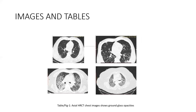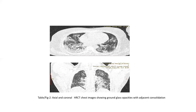Coming to images and tables: in these axial HRCT images we can see ground glass opacities. In the above images, the ground glass opacities are mainly seen in the subpleural location, and in the lower images we can see the lesions in both subpleural and centroparenchymal location. These axial and coronal HRCT images show ground glass opacities associated with adjacent consolidation.